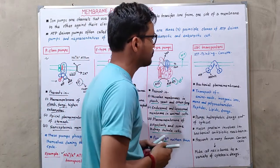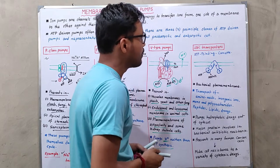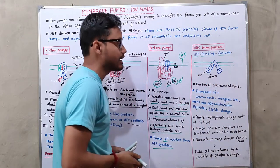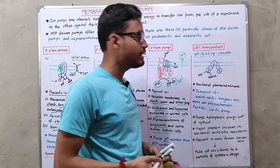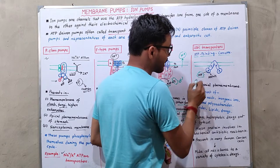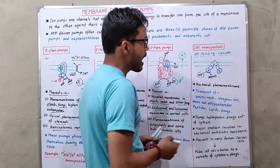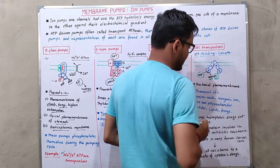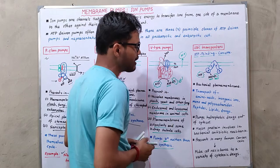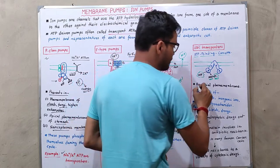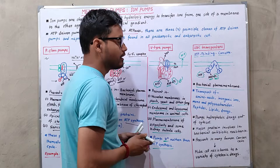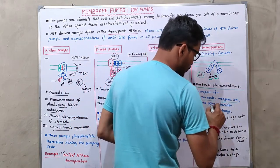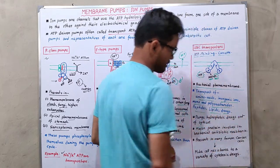The fourth major type is the ABC transporter, also known as ATP-binding cassette. These transporters hydrolyze ATP into ADP and inorganic phosphate, using that energy for transport. They are typically observed in the bacterial plasma membrane, where they transport amino acids, inorganic ions, mono- and polysaccharides, peptides, lipids, and drugs.